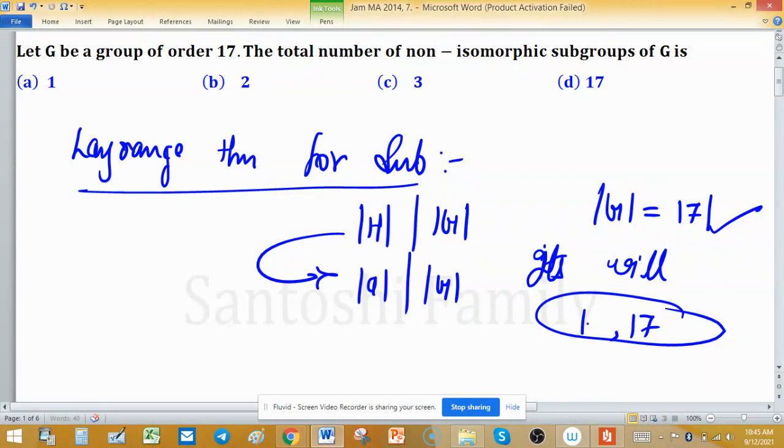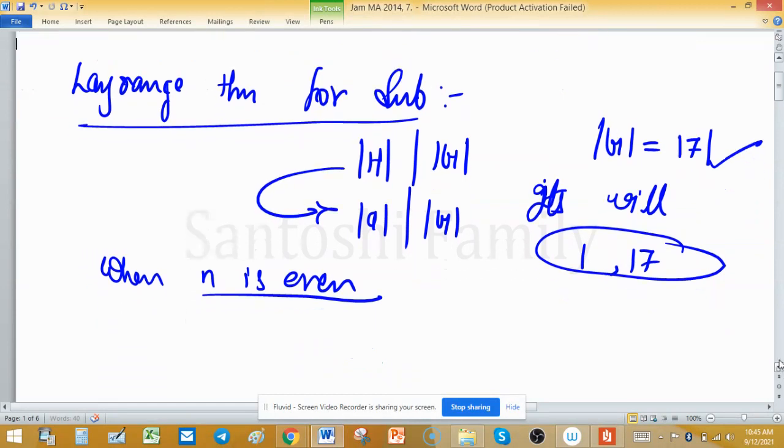But this is the case for prime numbers. What will happen in the case when n is an even number or any composite number? When n is a composite number, then we can write n as n1 raised to the power k1, n2 raised to the power k2, and so on, as powers of primes.